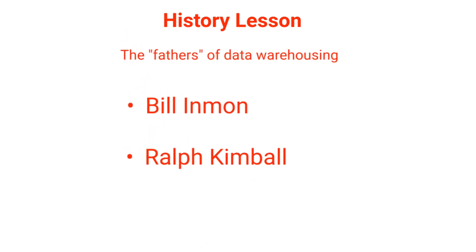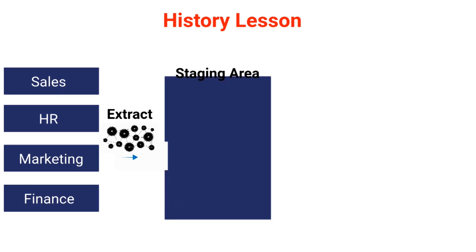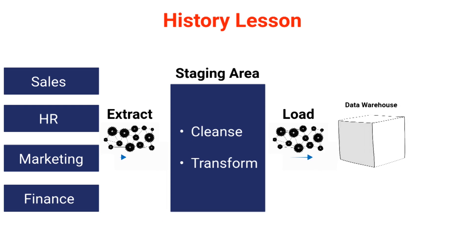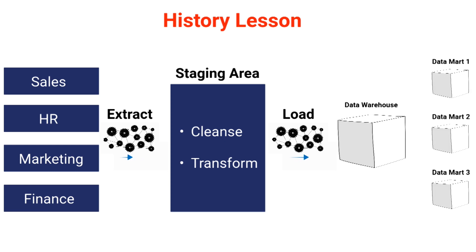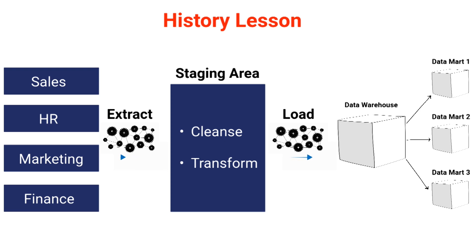Let's take a minute to go through the history of data warehousing. The fathers of data warehousing are Bill Inmon and Ralph Kimball, although they historically disagree on the approach. Regardless of the approach, data will be extracted from the source systems and staged, where it is cleansed and transformed before being loaded. Inmon believes the data should all be loaded into the data warehouse first to ultimately feed smaller, more targeted data marts where the data will be consumed. This approach builds more consistency since everything is first consolidated into a single data model. However, it can often take a long time before the business starts getting value. They call this the top-down approach.